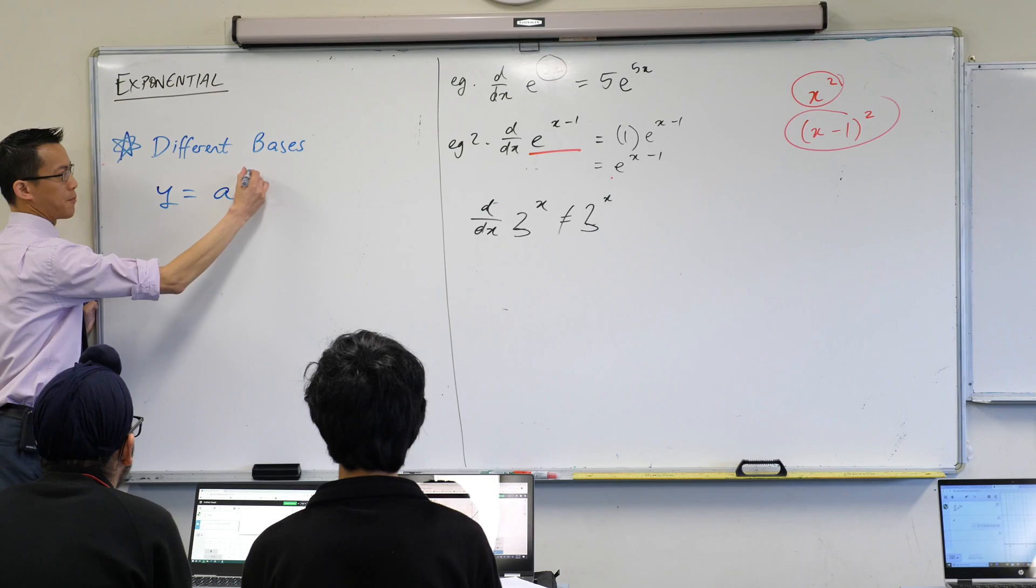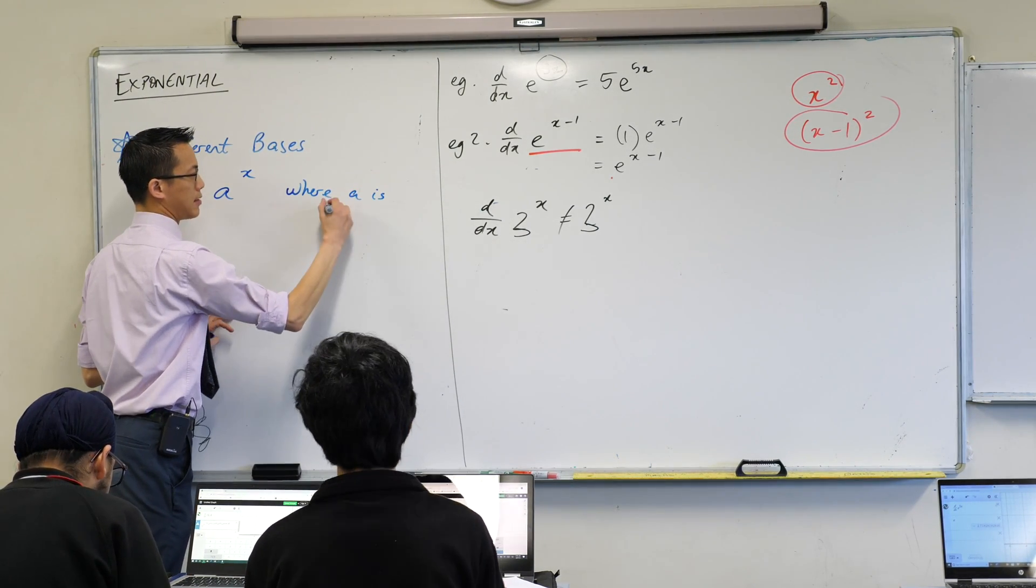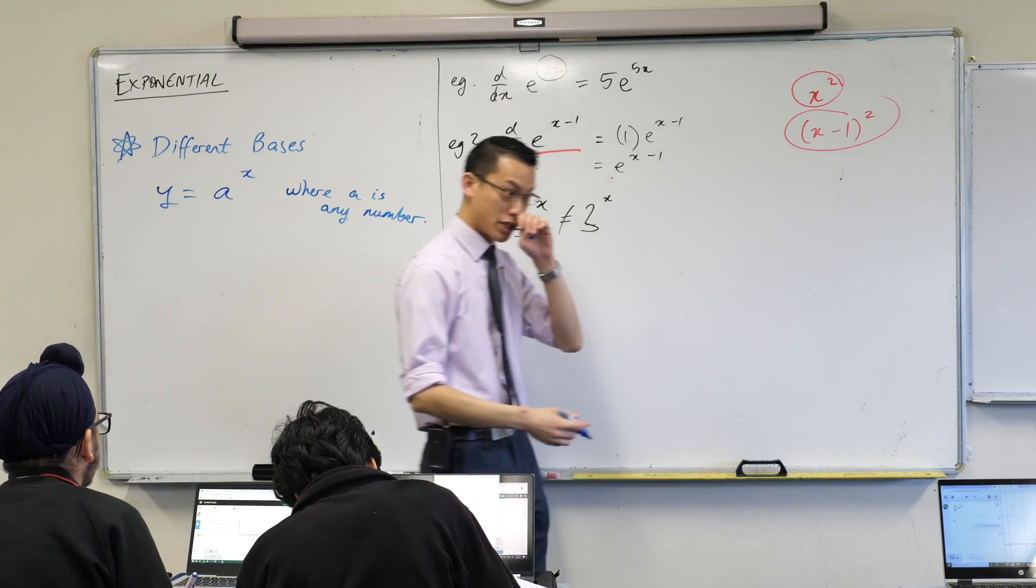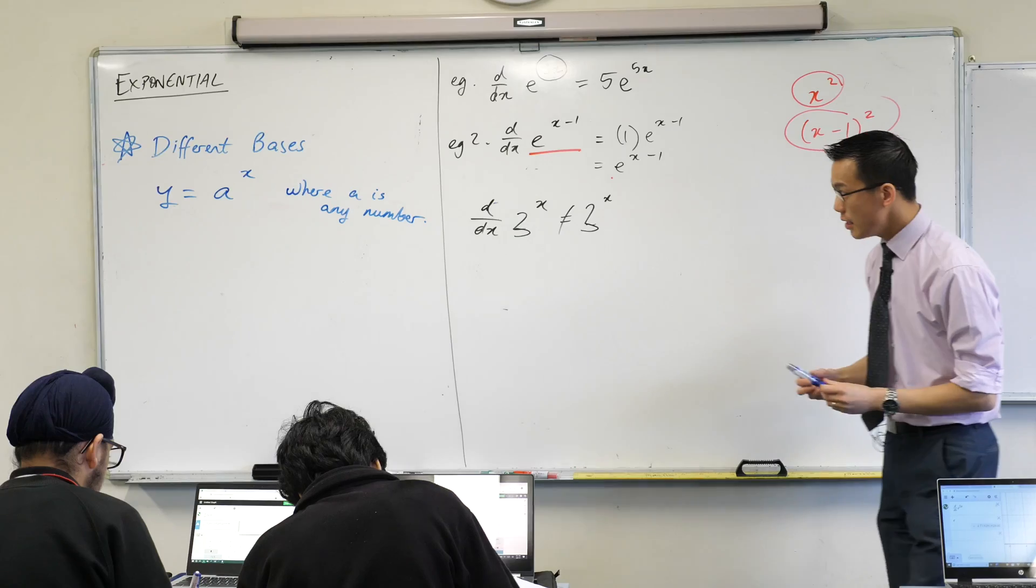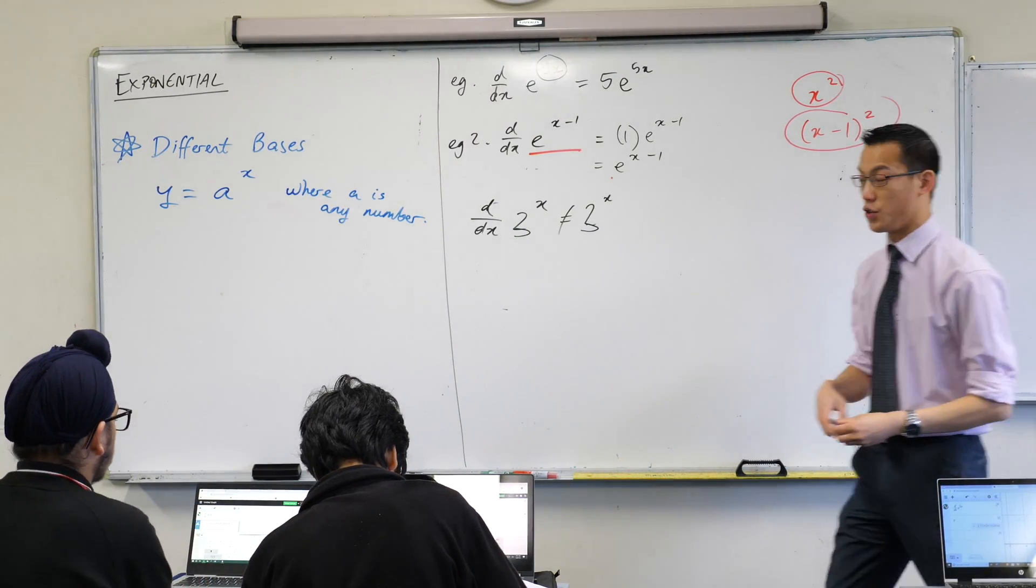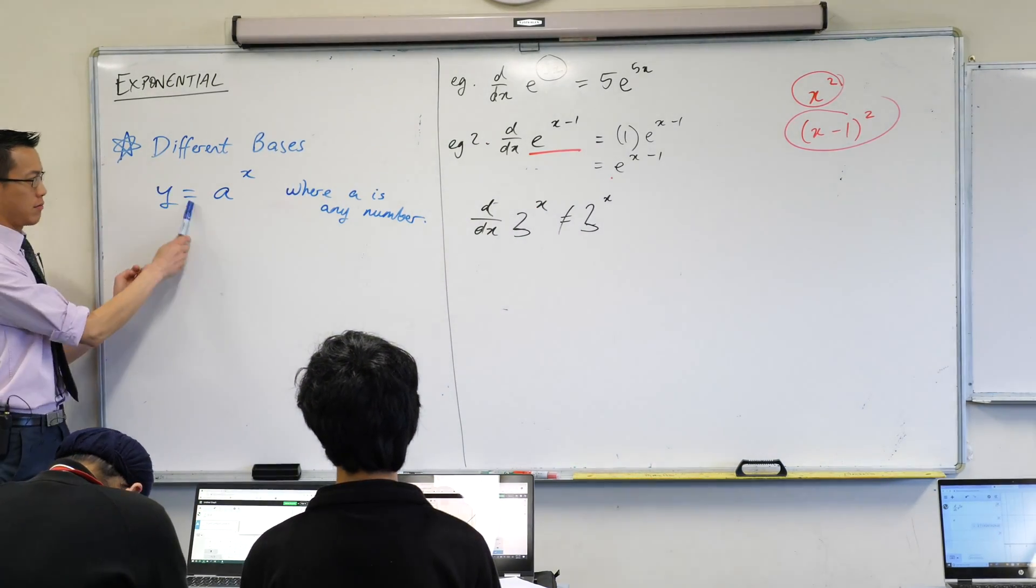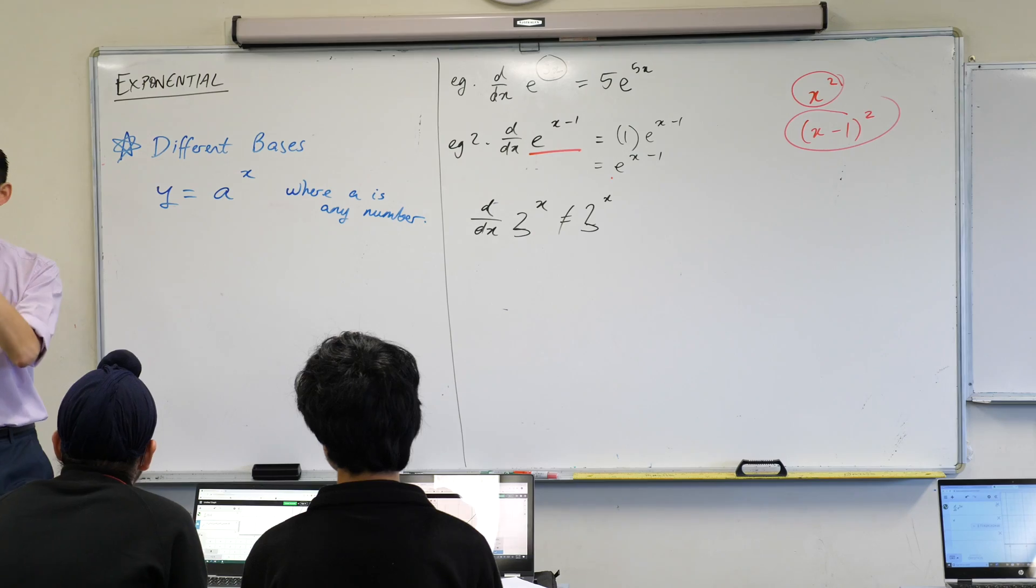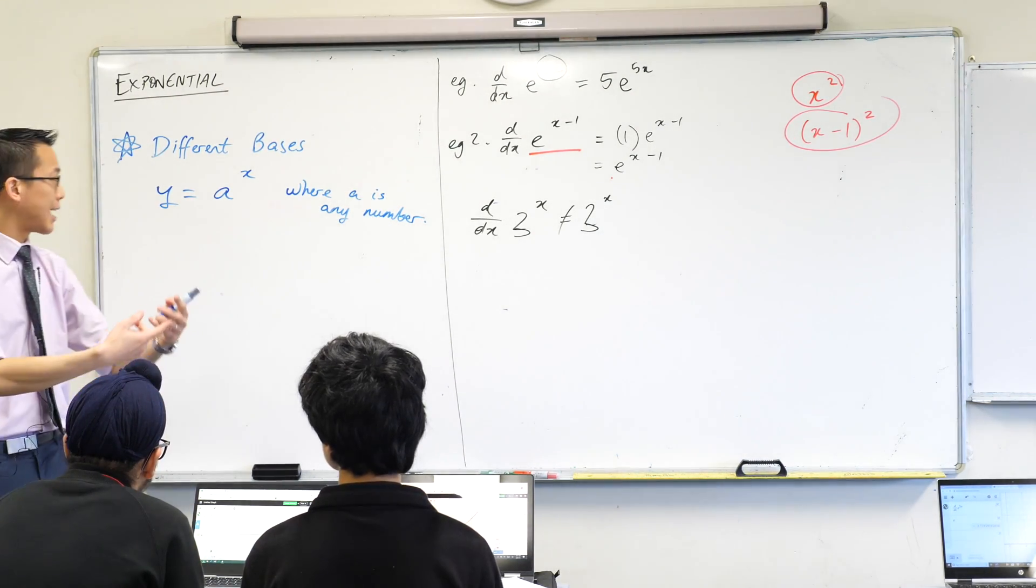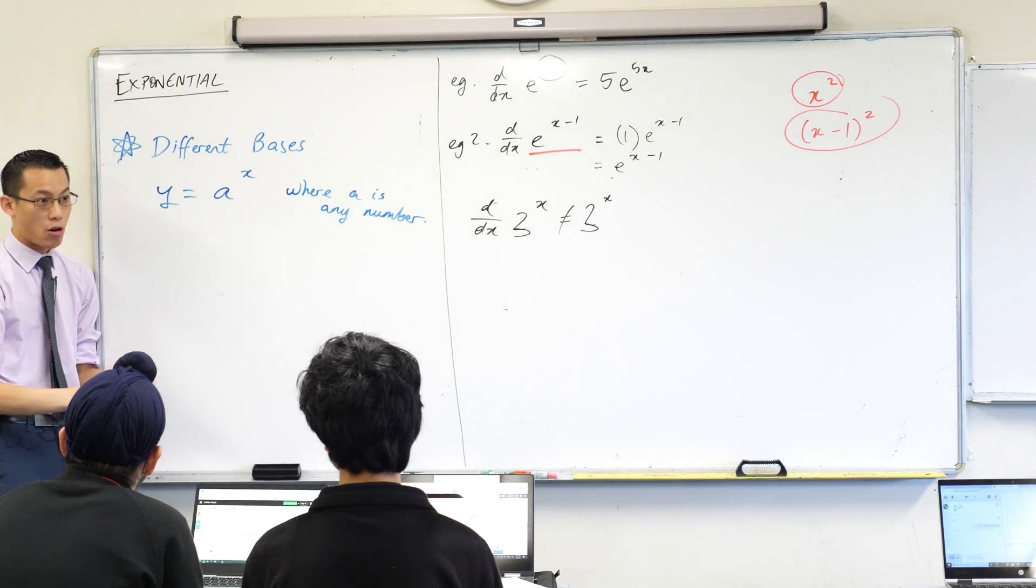So I'm going to consider this guy: a to the x, where a is any number, not just e, which we know is a special guy. Now this takes a bit of thought, but it's all the groundwork we've laid with exponentials and logs. This is an exponential equation. You can take any exponential equation and rewrite it as a log equation with logarithms in it.